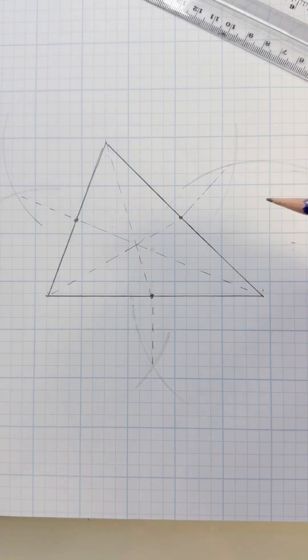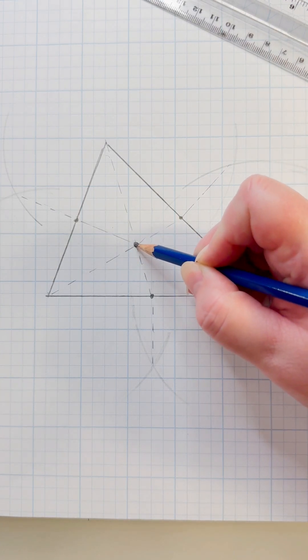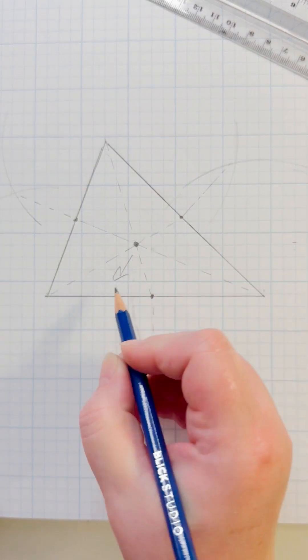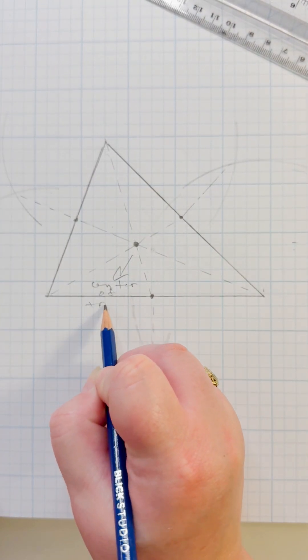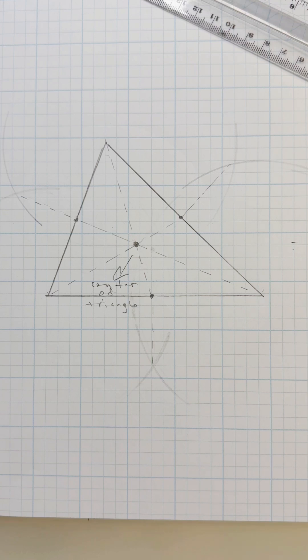And where they meet, where all three of those lines meet in the middle, is the center of your triangle. So I hope that helped you. Leave me some comments below if it did. Have a great day.